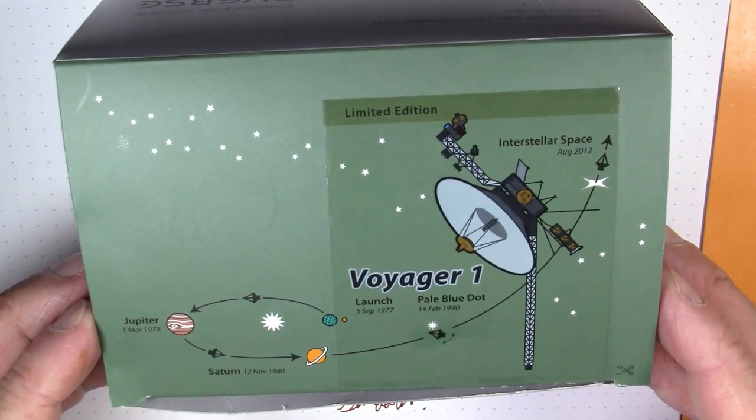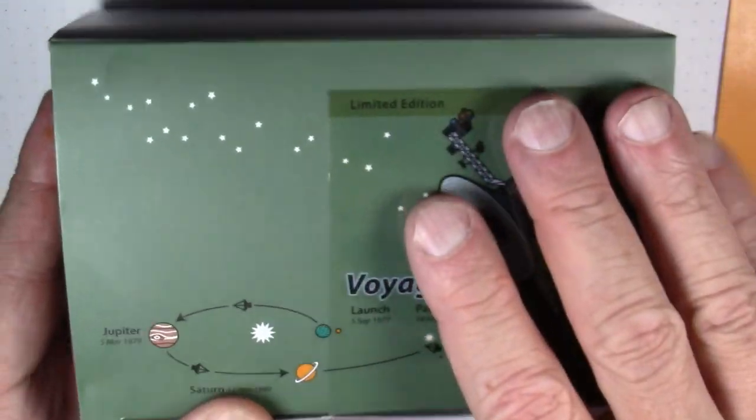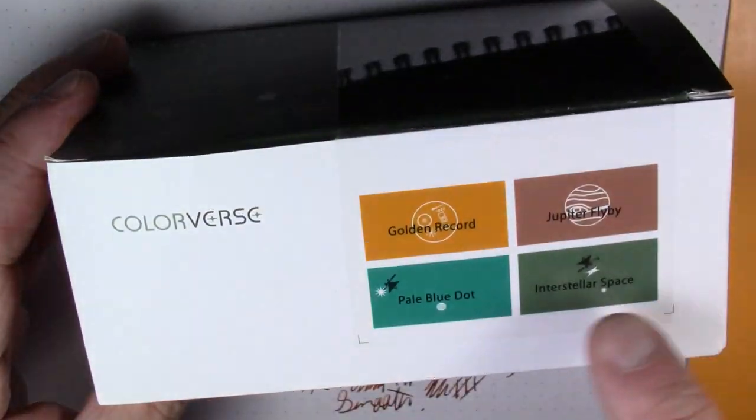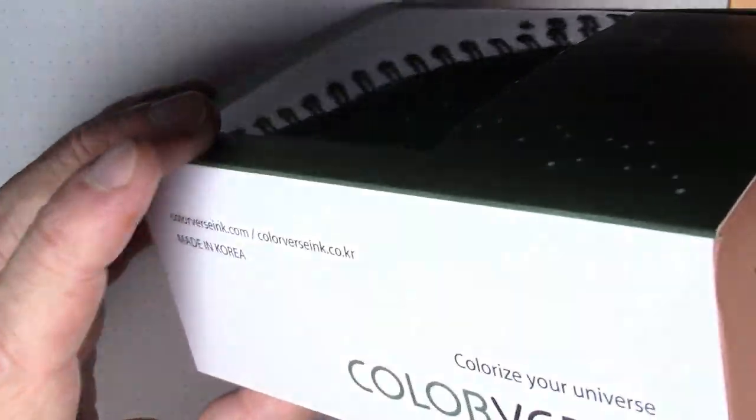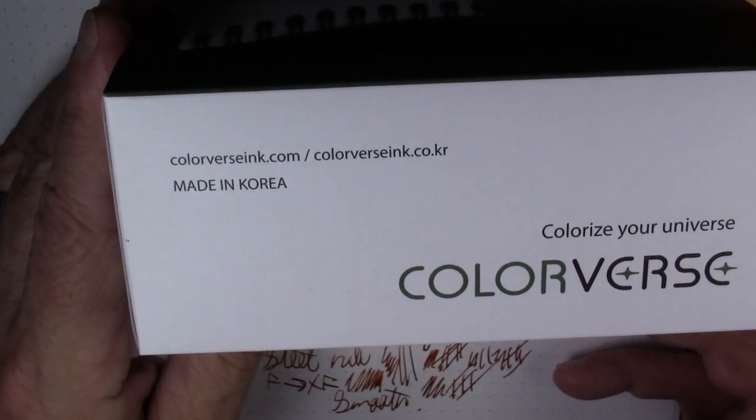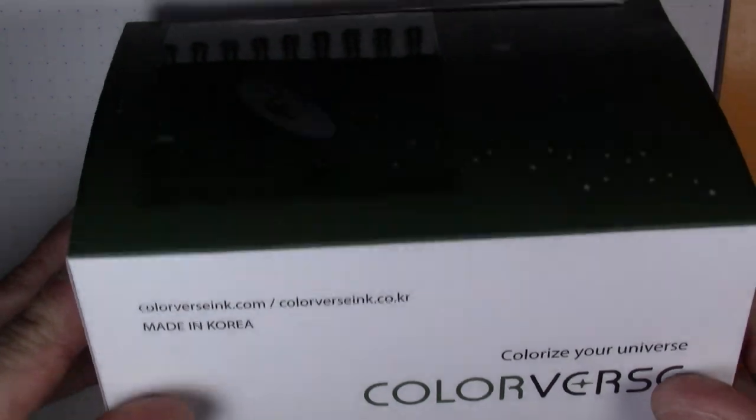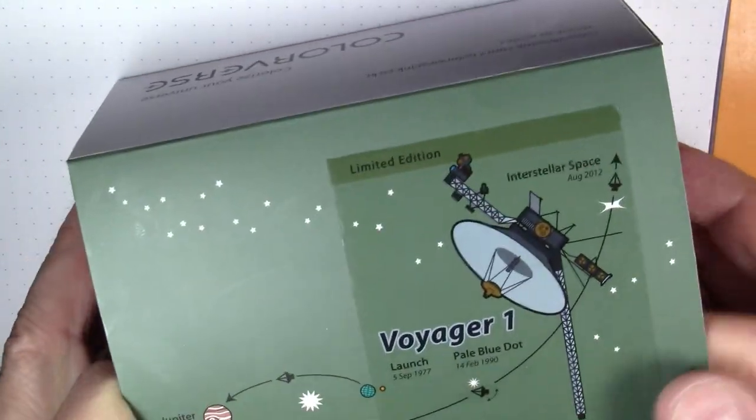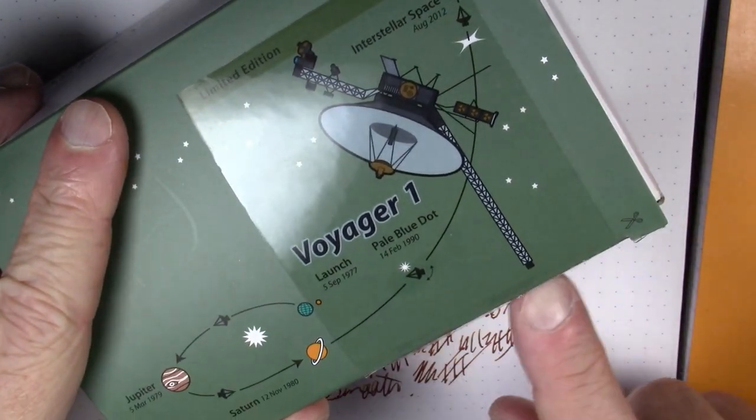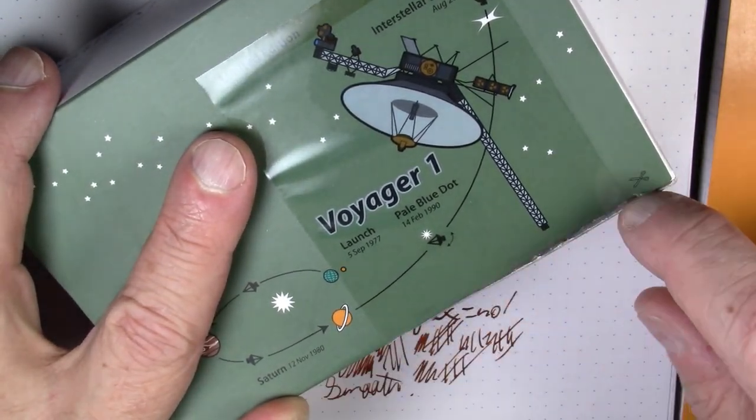So here's the unboxing of this. It does come in this very nice box. It has the pictures of the ink bottles on the side. It has this nice graphic on the top, illustrates which colors you're getting. It says Voyager 1 on this side and some information about Colorverse, made in Korea, website, et cetera. This is a clear plastic seal here. The only cut I actually made was just to slit that open there.